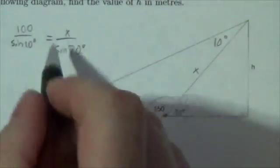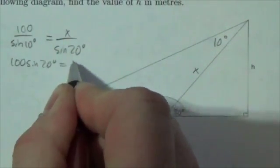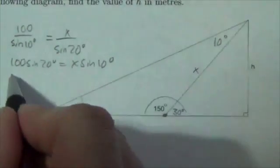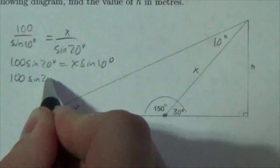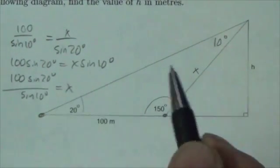Now I'm going to cross multiply here. I'll get 100 times the sine of 20 degrees is going to equal x times the sine of 10 degrees. And then I know that 100 sine of 20 degrees divided by the sine of 10 degrees is going to equal my x.